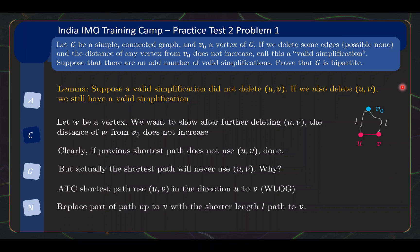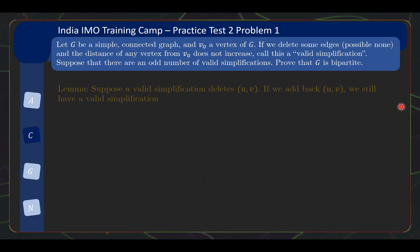And now, for the other direction, it is actually much simpler. Suppose a valid simplification deletes UV. We want to show that if we don't delete UV, we still have a valid simplification. Well, obviously, if you delete less edges, your distance is not going to increase. So, we are done. But let's write it out for those that need a bit more explanation.